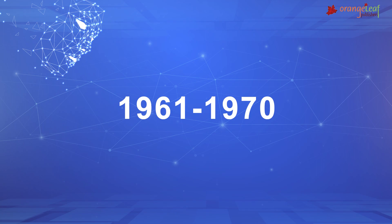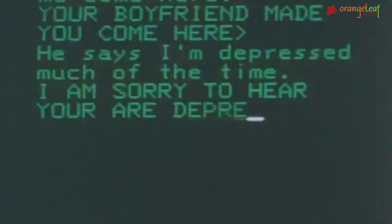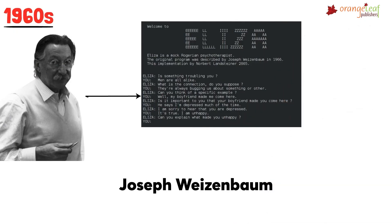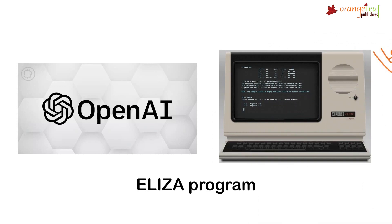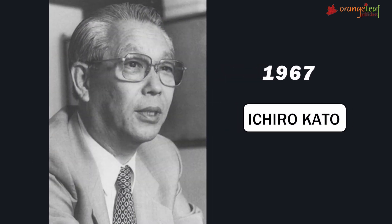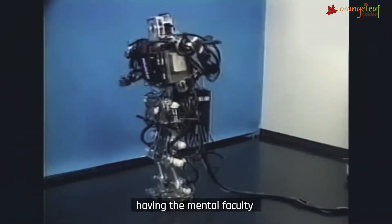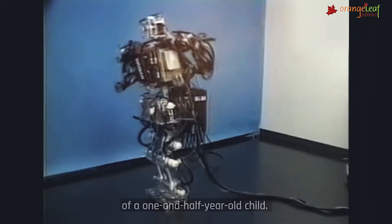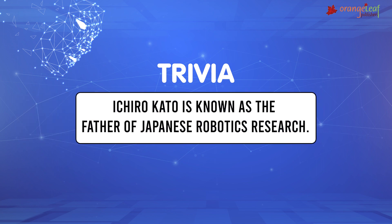1961 to 1970. In 1966, at MIT Artificial Intelligence lab, Joseph Weizenbaum built the first chatbot, the ELIZA program, that can communicate between humans and machines. In 1967, Ichiro Kato developed an anthropomorphic robot called Wabot. Wabot was able to walk with its legs, grip with its arms, and see using two cameras. Trivia: Ichiro Kato is known as the father of Japanese robotics research.